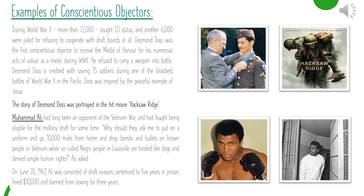Muhammad Ali had been a long opponent of the Vietnam War and had fought being eligible for the military draft. He said: 'Why should they ask me to put on a uniform and go 10,000 miles from home and drop bombs and bullets on brown people in Vietnam, while so-called Negro people in Louisville are treated like dogs and denied simple human rights?' On the 20th of June 1967, Ali was convicted of draft evasion and sentenced to five years in prison. He was fined ten thousand dollars and banned from boxing for three years.